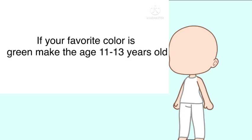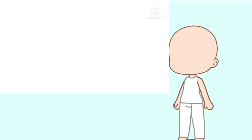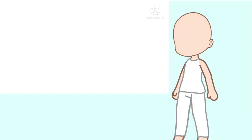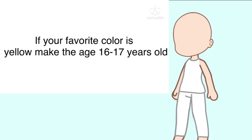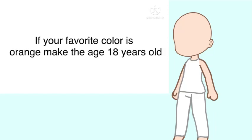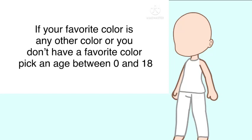If your favorite color is green, make the age 11 to 13 years old. If your favorite color is blue, make the age 14 to 15 years old. If your favorite color is yellow, make the age 16 to 17 years old. If your favorite color is orange, make the age 18 years old. If your favorite color is any other color or you don't have a favorite color, pick an age between 0 and 18.